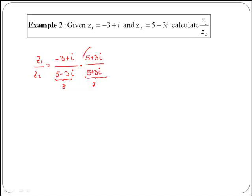So we need to multiply by 5 plus 3i also on top, and if you realize, this fraction here is simply a 1, so we haven't changed at all the question. Now what we have is a multiplication of two fractions. So if we multiply top by top and also bottom by bottom,